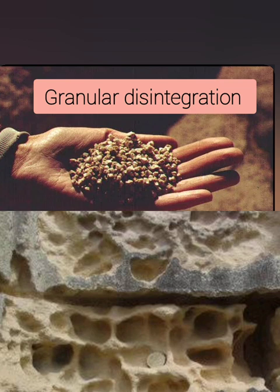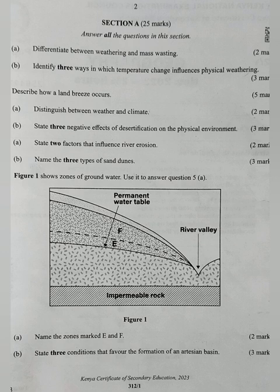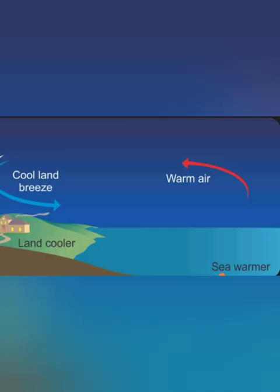When answering about temperature changes and physical weathering, you must mention exfoliation, block disintegration, and granular disintegration. Question 2: describe how a land breeze occurs. During the night, the sea is relatively warmer than the land since the land loses its heat more rapidly. The air over the water, being warmer, rises while cooler, denser air from the land flows in to replace it. This movement of cool air from the land to the sea during nighttime is called a land breeze.